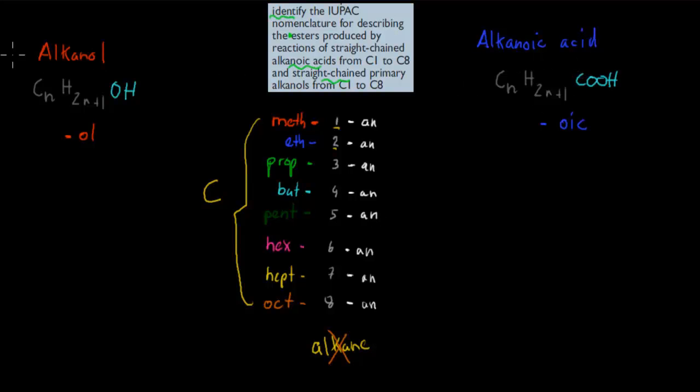Now with alkanoic acids, it's quite similar. The only difference is the last part. It's actually oic acid. So we add that suffix, and then we get our naming for alkanoic acid. So for example, if we have one carbon, we call it methanoic acid.